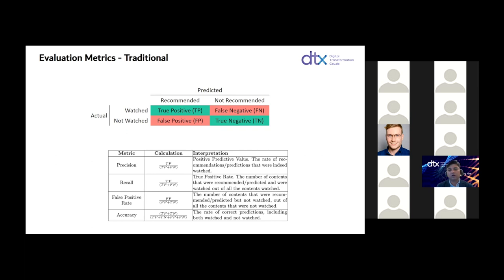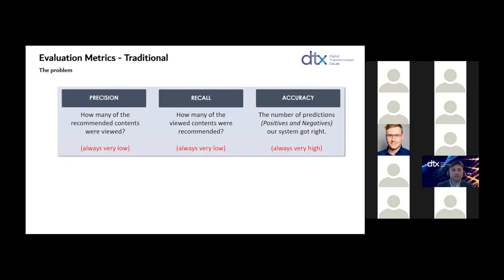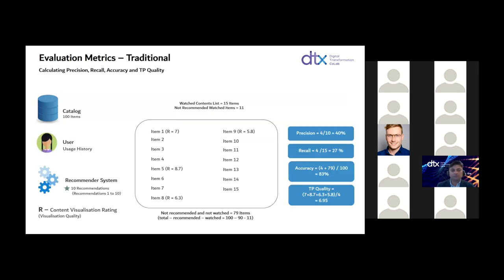Also an added challenge is that the system is offline. The precision and recall will always be very low because very few recommended contents will be watched — no user in a normal case will watch all 10 recommendations, so even if they like one we should consider it a success, but precision will always be very low. Accuracy will be very high always because there are thousands of movies not recommended and not watched. These are the main problems with traditional metrics, and we have tried to create new metrics which would allow us to measure system performance even offline.